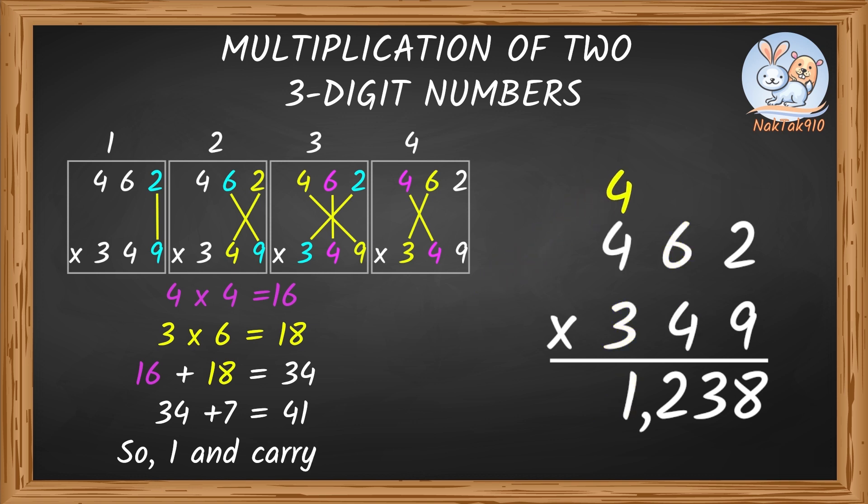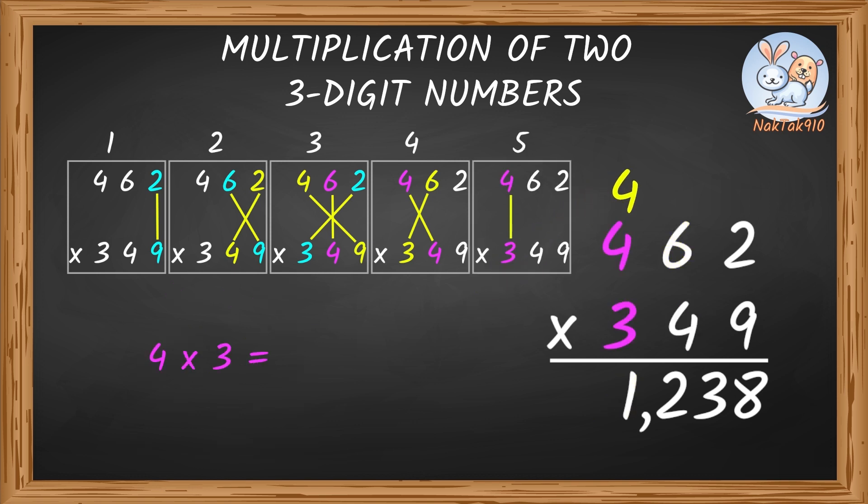So, 1 and carry 4. 4 times 3 equals 12. 12 plus 4 equals 16.